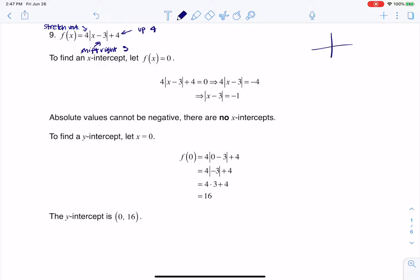So keep in mind our basic absolute value function, our toolkit function, looks something like this, right? It's a V. So I want you to imagine that I'm going to go 3 units right, 1, 2, 3.